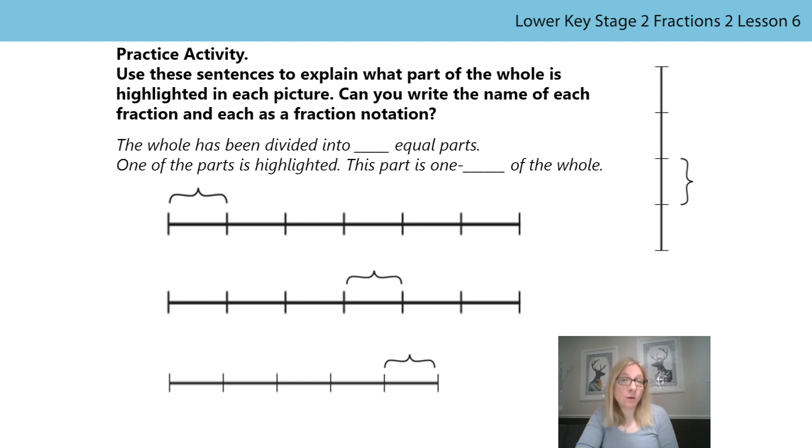For the first two lines, the whole has been divided into six equal parts. One of the parts is highlighted. This part is one-sixth of the whole. Even though it's a different part highlighted on each, they still represent one-sixth. The part highlighted on the bottom line represents one-fifth, and on the vertical line, one-quarter is highlighted. Great work if you got those right.